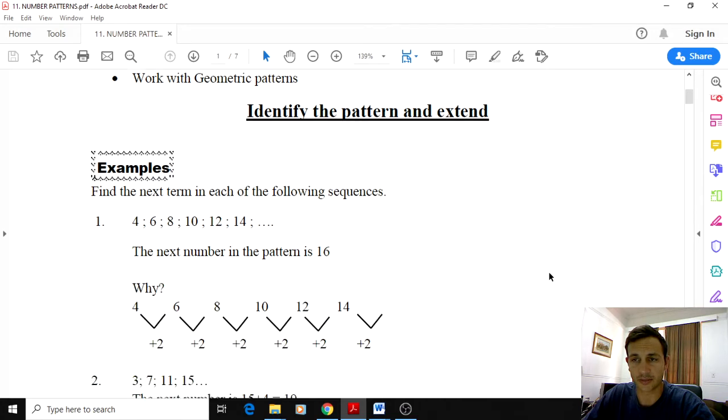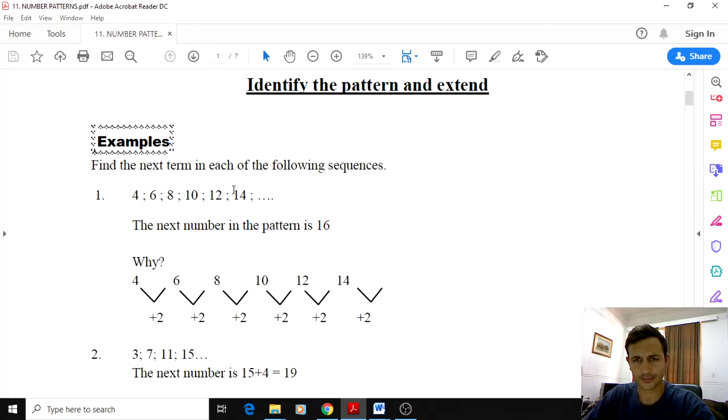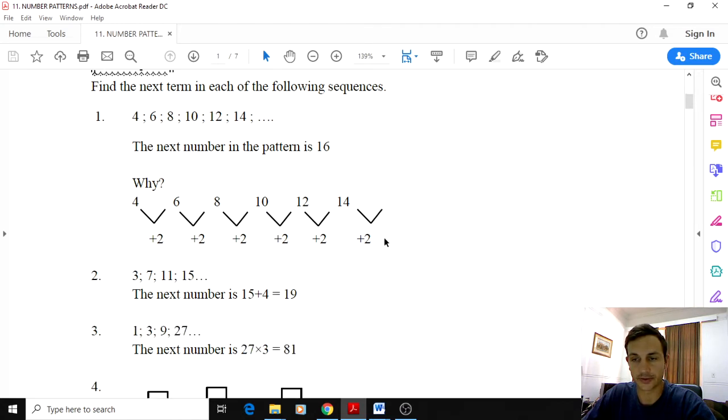A few examples of identifying the pattern and extending it. Here you can see we have a whole lot of terms here. Consecutive terms. And they have positions as well: 1, 2, 3, 4, 5, 6. You see there they are going up by 2. Every term is going up by 2. So the next number after 14 will be 14 plus 2 which is 16.